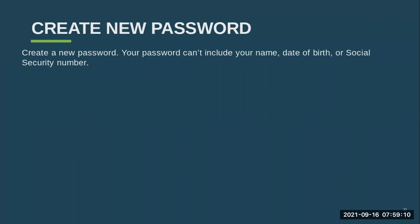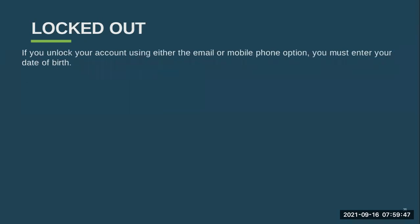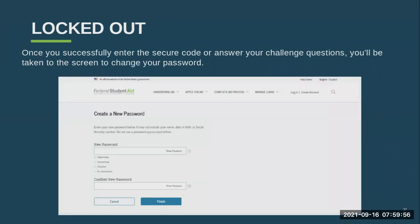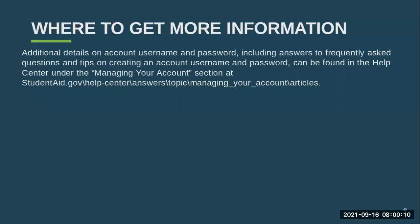Once you have completed those steps, it will give you the opportunity to create a new password — it won't send your old password to you, you'll just create a new one. Be sure your password doesn't include your name, date of birth, or social security number. The same process works if you are locked out of your account, which typically happens from trying your password too many times unsuccessfully. Additional details will be under the managing your account section at studentaid.gov.